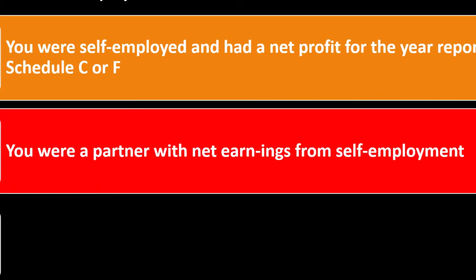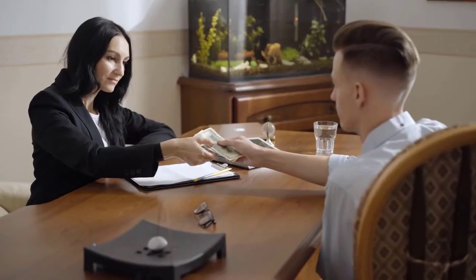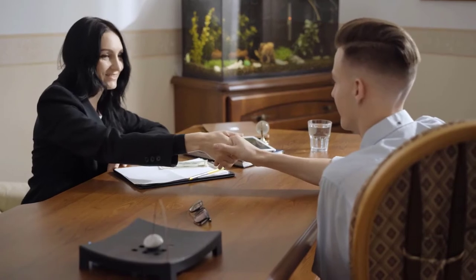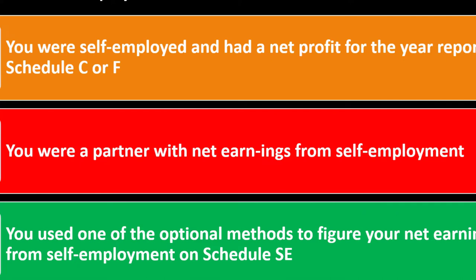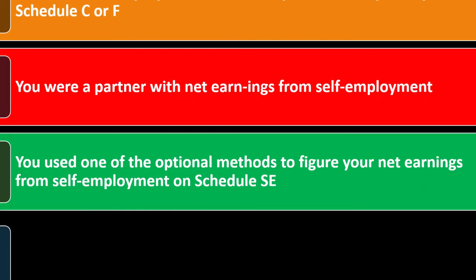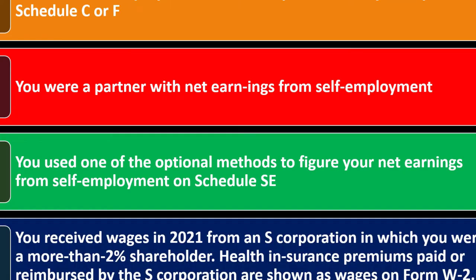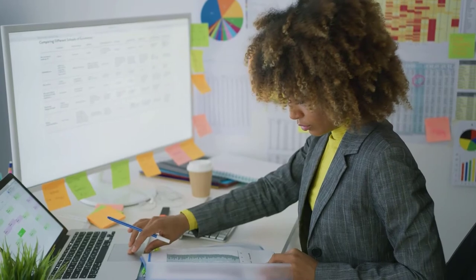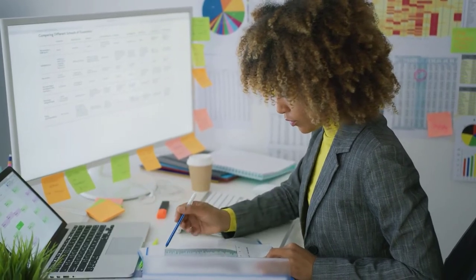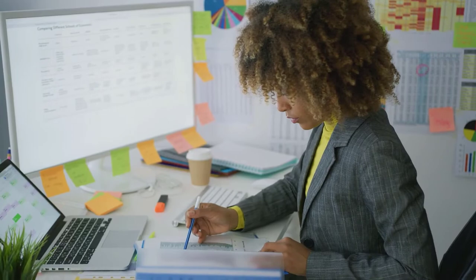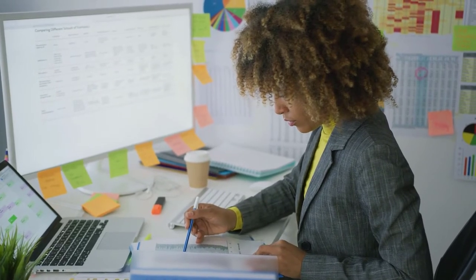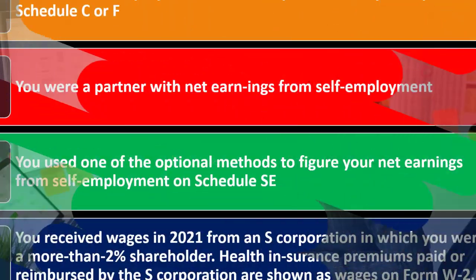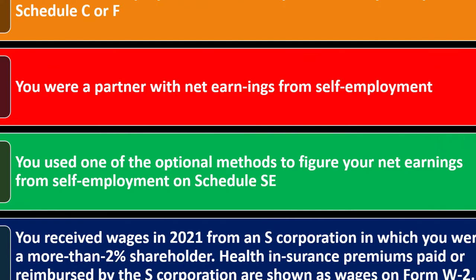Or you were a partner with net earnings from self-employment in a partnership situation — subject to self-employment tax, which would flow through to the 1040 — or you used one of the optional methods to figure your net earnings from self-employment on Schedule SE. If you're subject to self-employment, you're being treated as both employee and employer, paying the payroll taxes of both — essentially equivalent to being a C corporation.